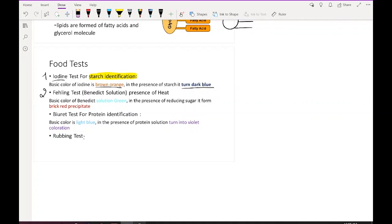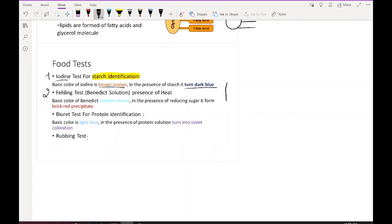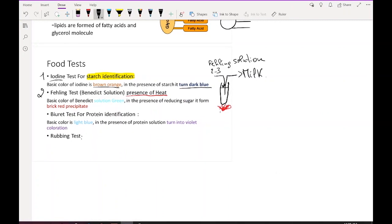To know if there is reducing sugar in a certain type of food, if I have a test tube with milk, which contains lactose and galactose (reducing sugars), how can I confirm this? I do the Fehling test. I add two to three drops of Fehling solution to the milk. Note here that presence of heat is required for the reaction to take place. After a while, I get a brick red precipitate. This precipitate means that this type of food contains reducing sugar.